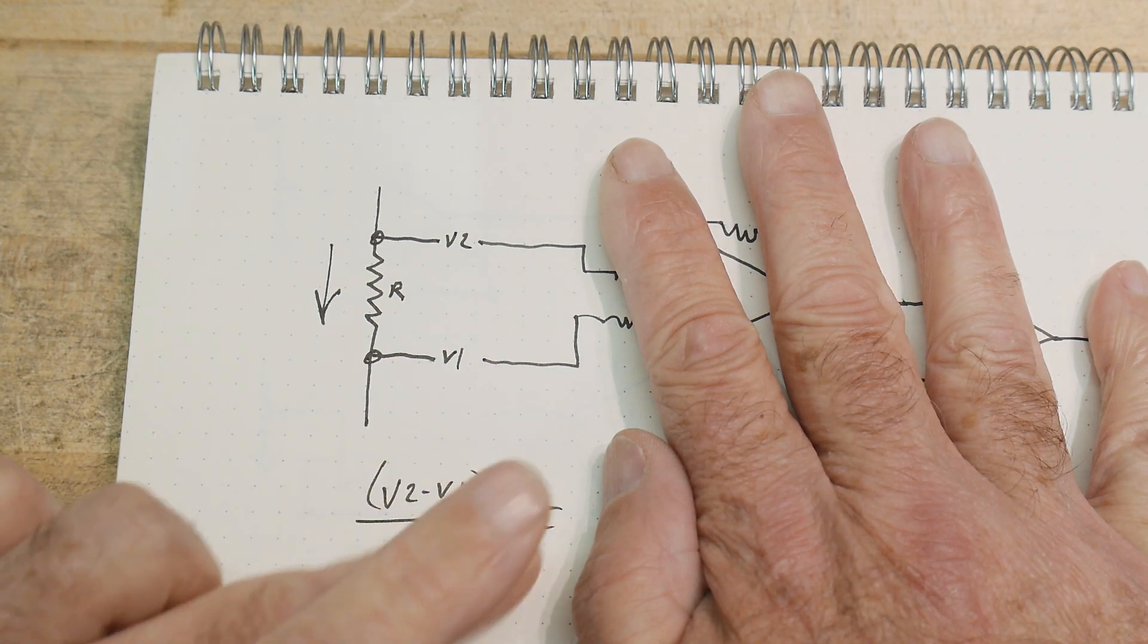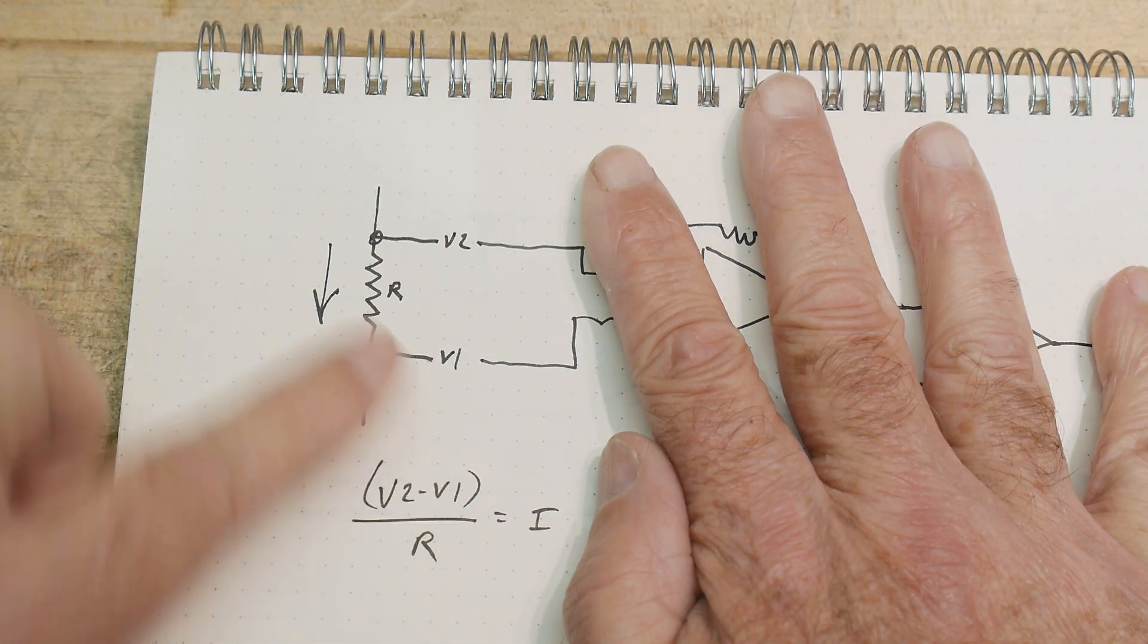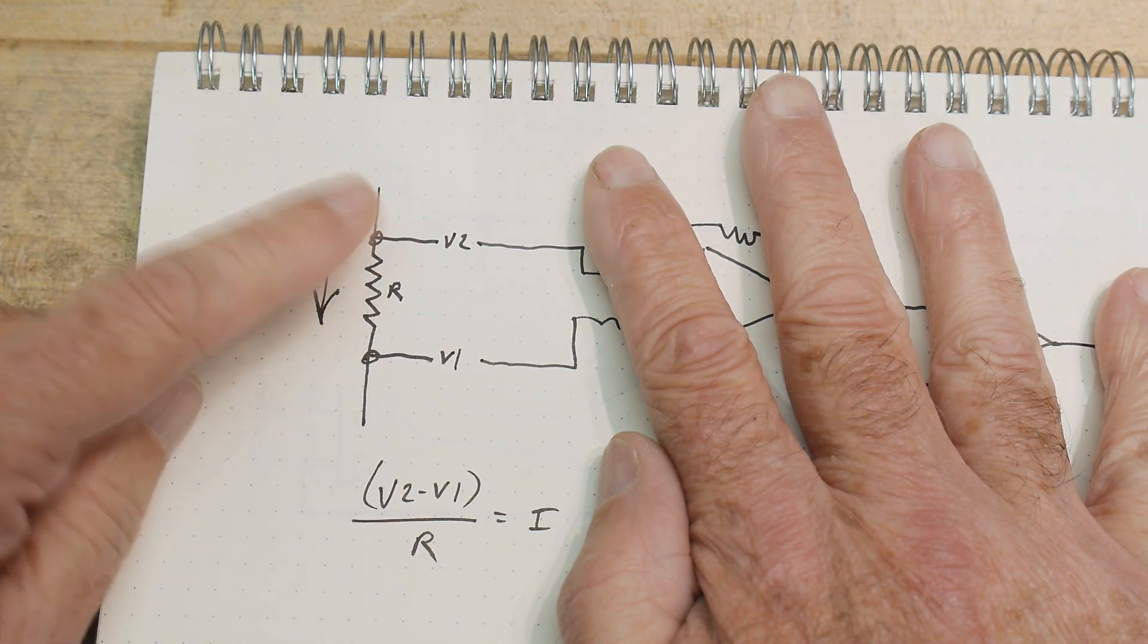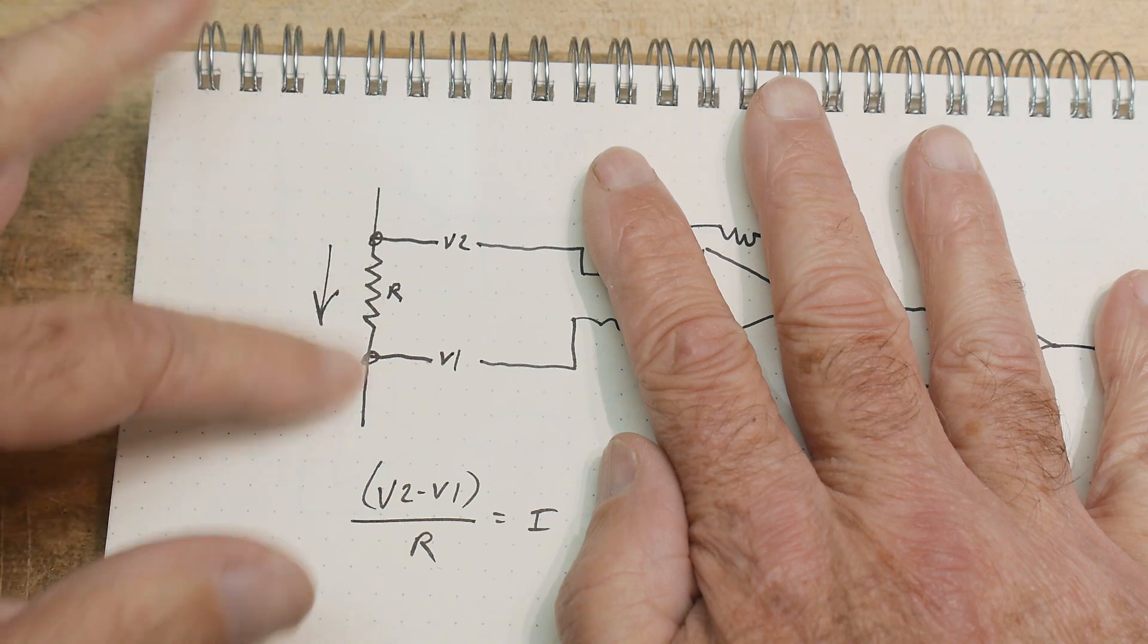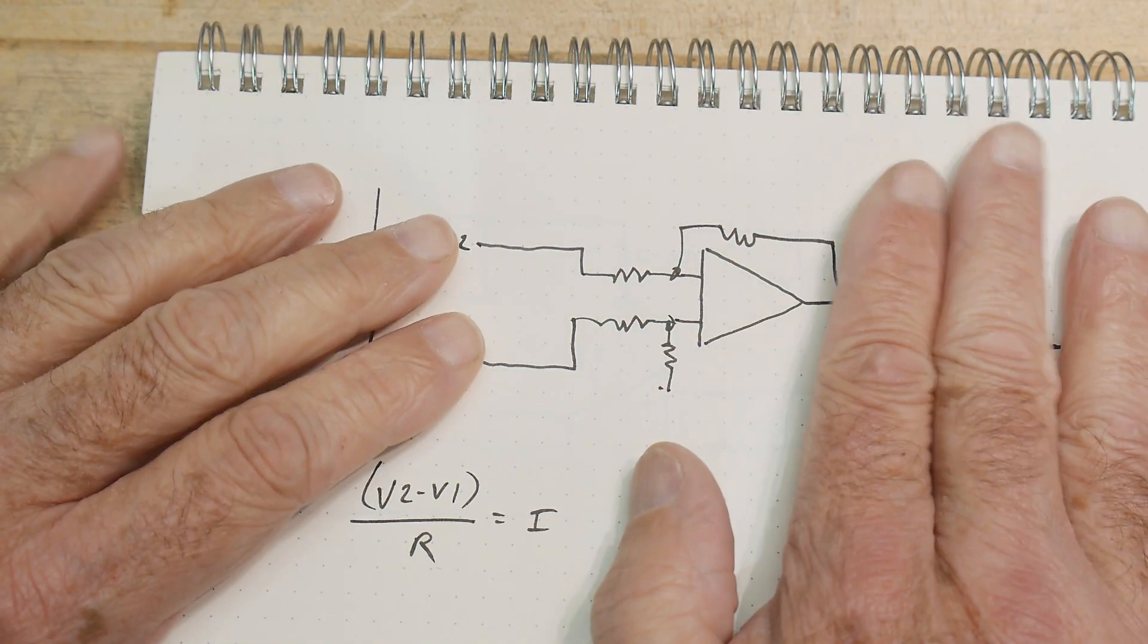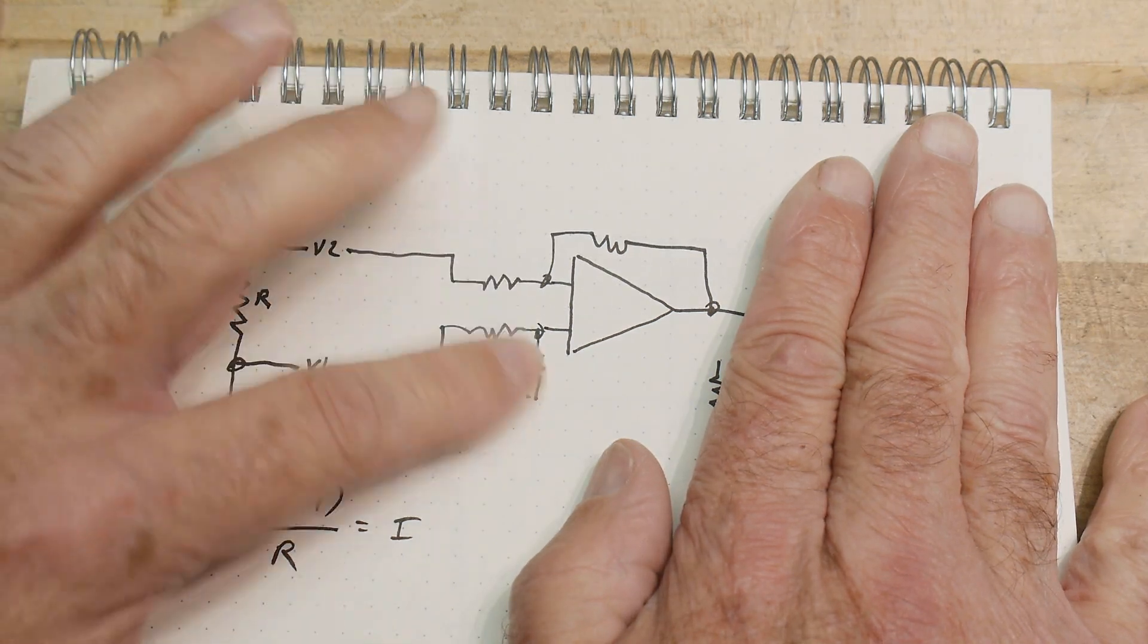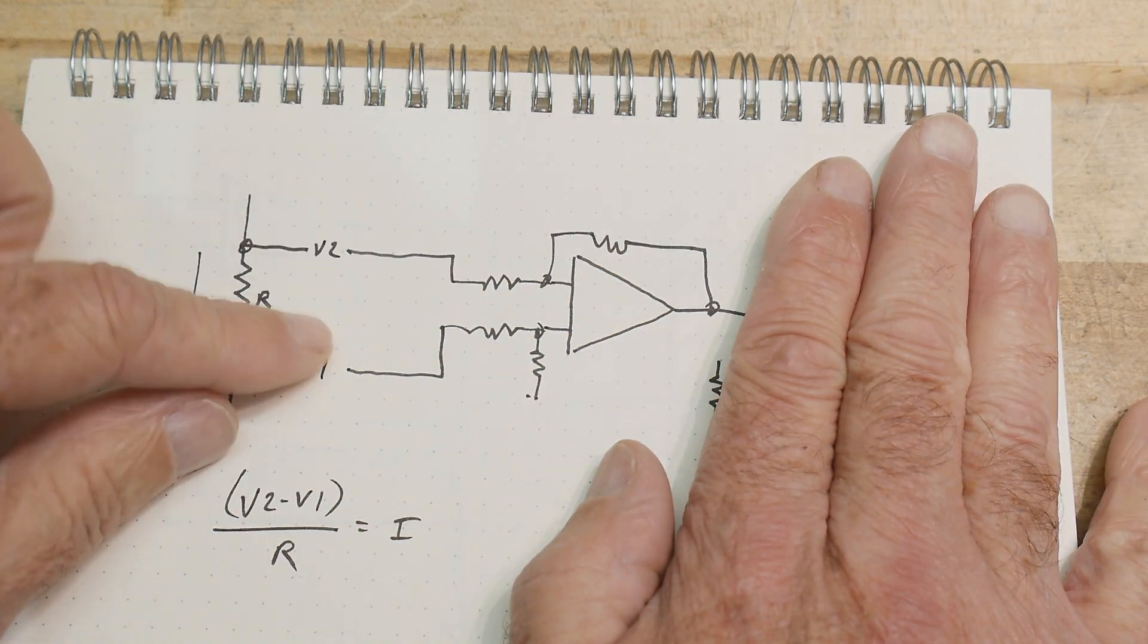So we need to be able to do this in a circuit somehow. First of all, we need to measure the difference across these two voltages. Now this might not be ground and this might not be ground, so we need to take the difference between the two. Well, we can do that with a difference amplifier. We've seen this before. We could take a difference amplifier and it'll take these two voltages.